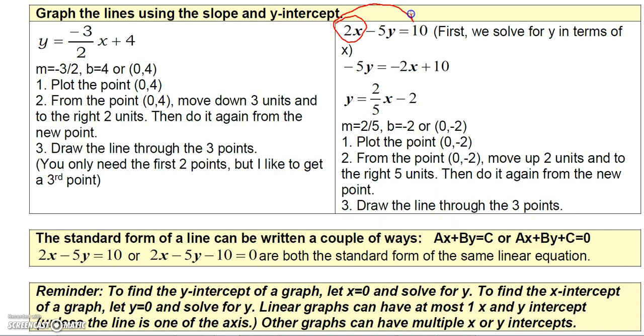What I'm going to do first is I'm going to take this 2x and move it from the left to the right side of the equation. That'll leave me with -5y on the left, and then moving it to the right gives me -2x plus 10.